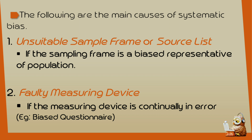The second cause is faulty measuring device. If the measuring device is continually in error, we can see how much that error affects our results. We can also see errors in our questionnaires. That is the faulty measuring device — we can see the errors of our study through the questionnaires.